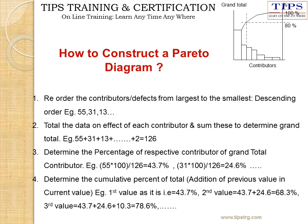First, reorder the contributors or defects from largest to smallest, i.e., descending order by frequency. Total the data on the effect of each contributor and sum these to determine the grand total. Determine the percentage of each respective contributor relative to the grand total. Then determine the cumulative percentage of the total — for example, 43.7%, then 43.7% plus 24.6%, and so on.